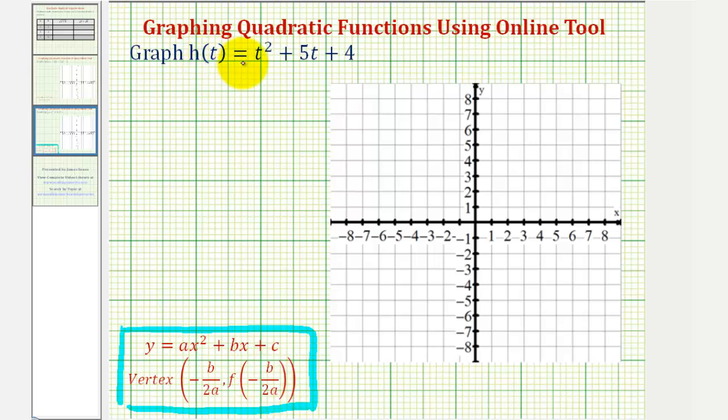Notice how our quadratic function uses t instead of x, which doesn't make a difference, but if it's helpful, we could write the given function as y equals x squared plus 5x plus 4. This should produce the same graph. Notice a is 1, b is 5, and c is 4.